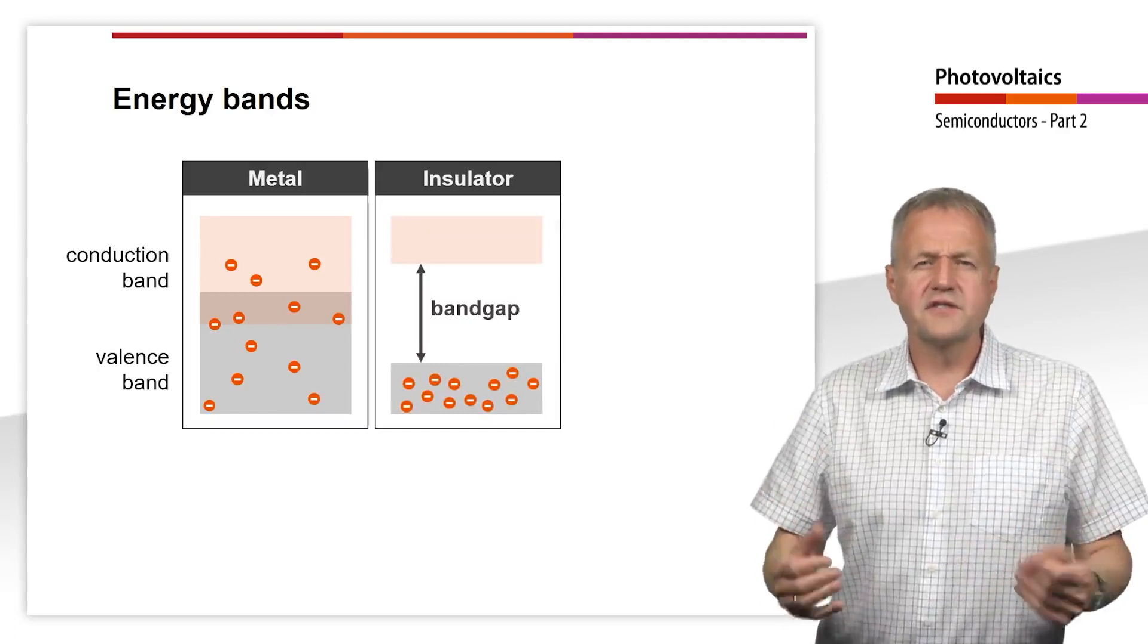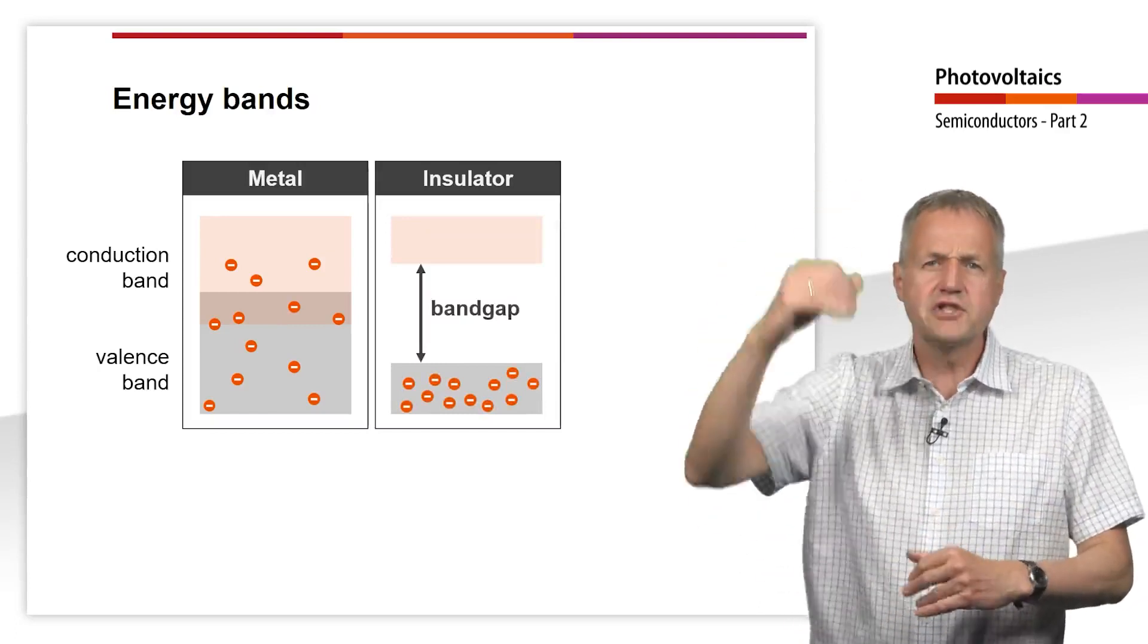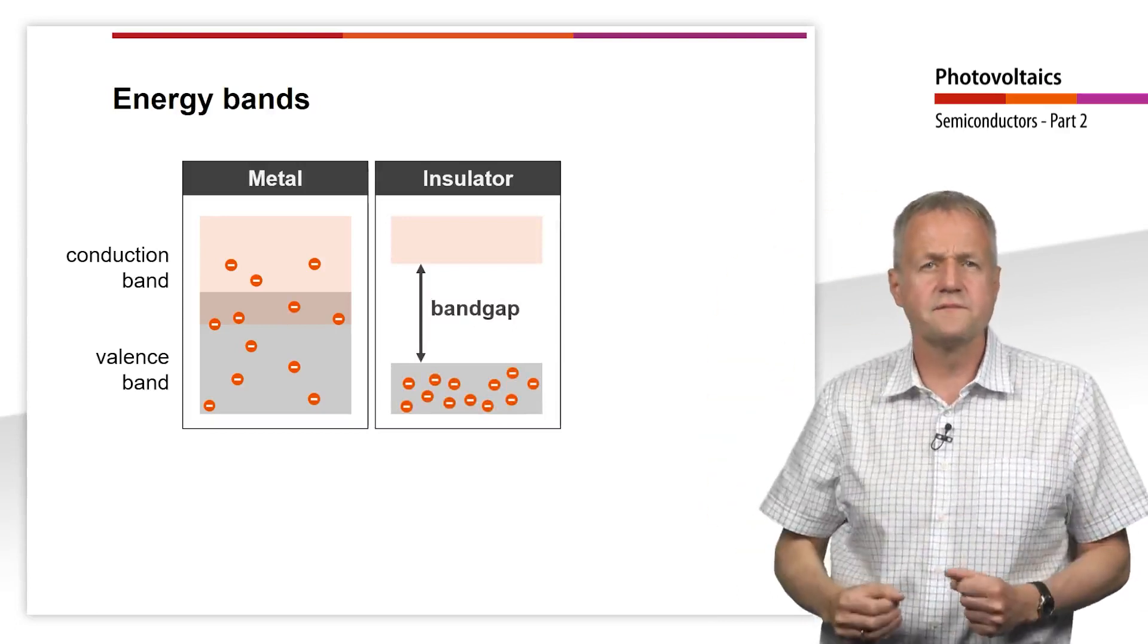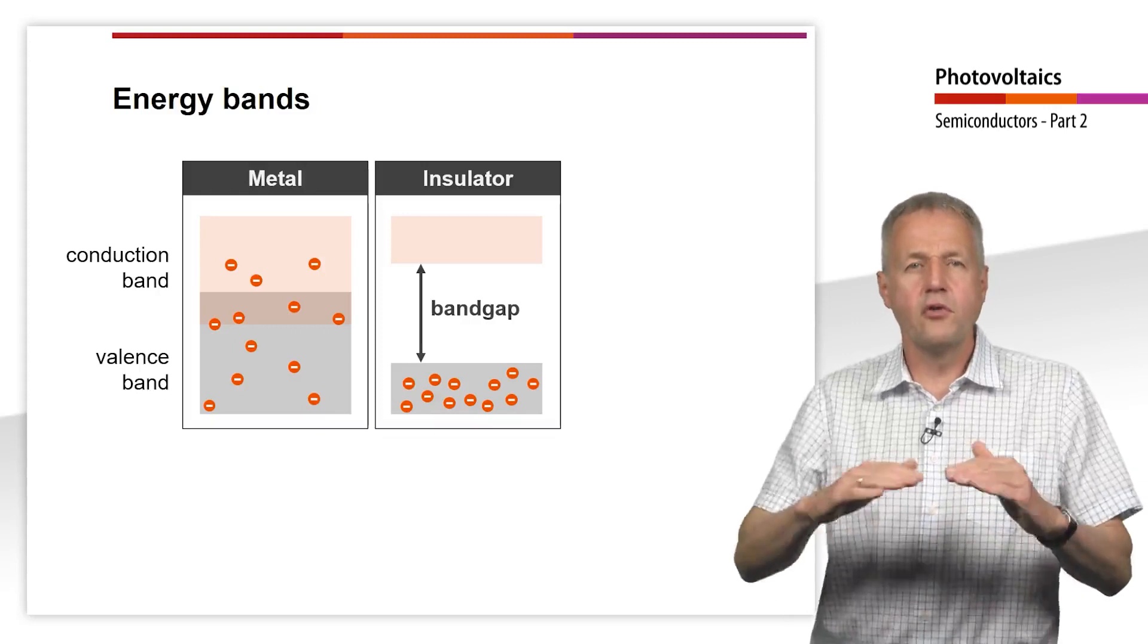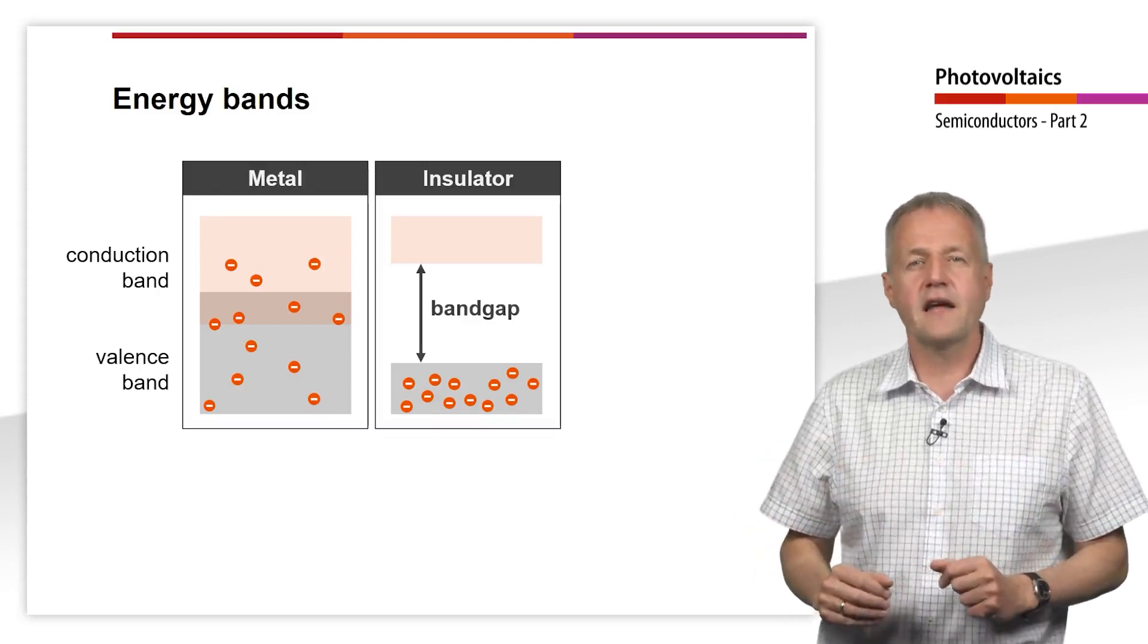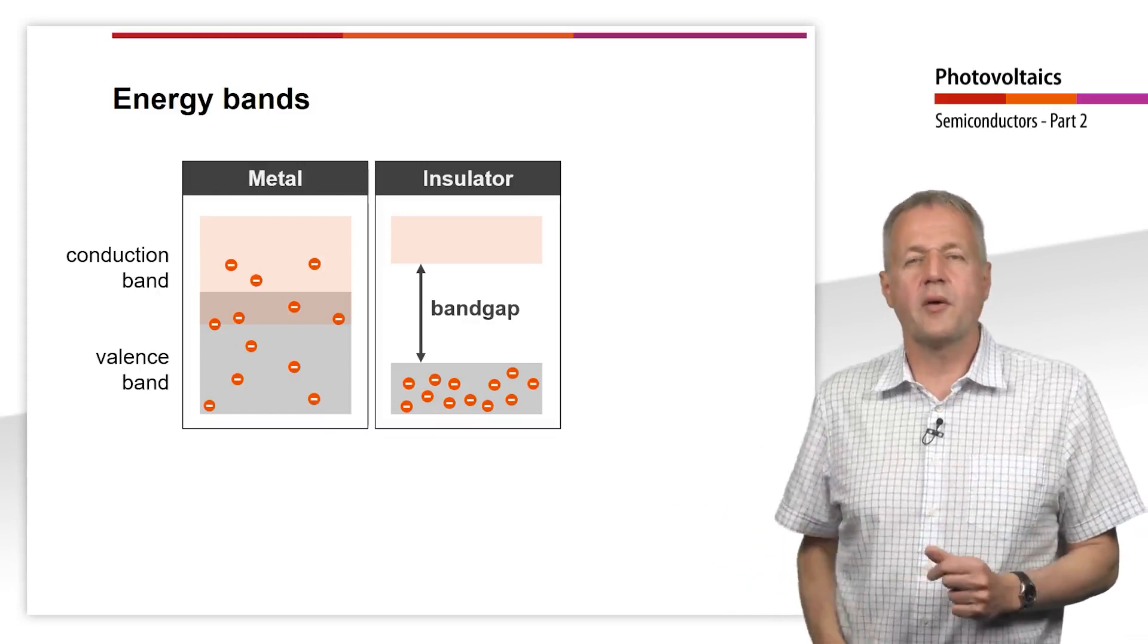In the insulator, on the other hand, there is a large band gap between valence and conduction band. The large band gap corresponds to the blocking of the upper parking deck with simultaneous overfilling of the lower parking deck.